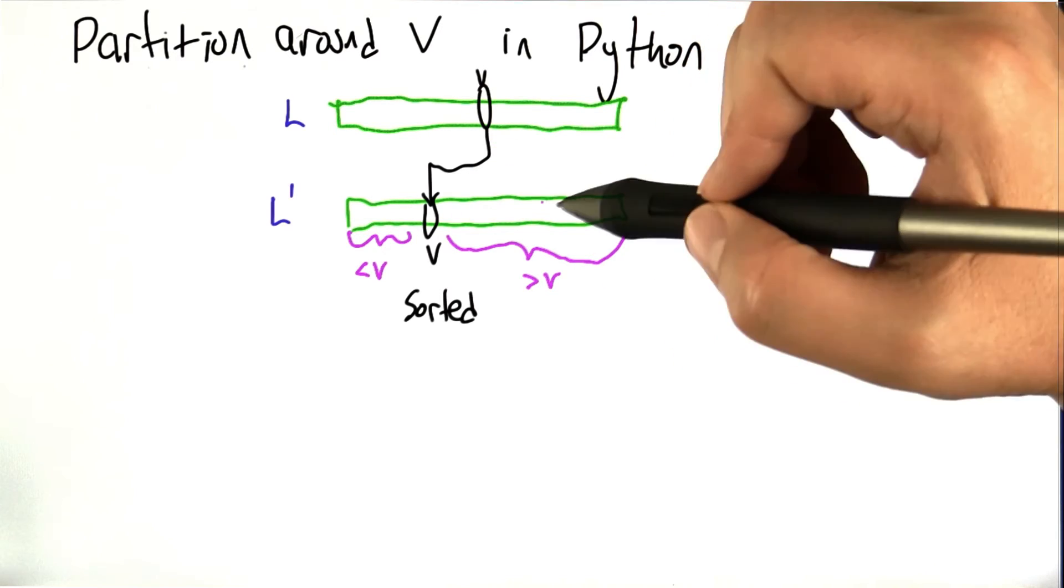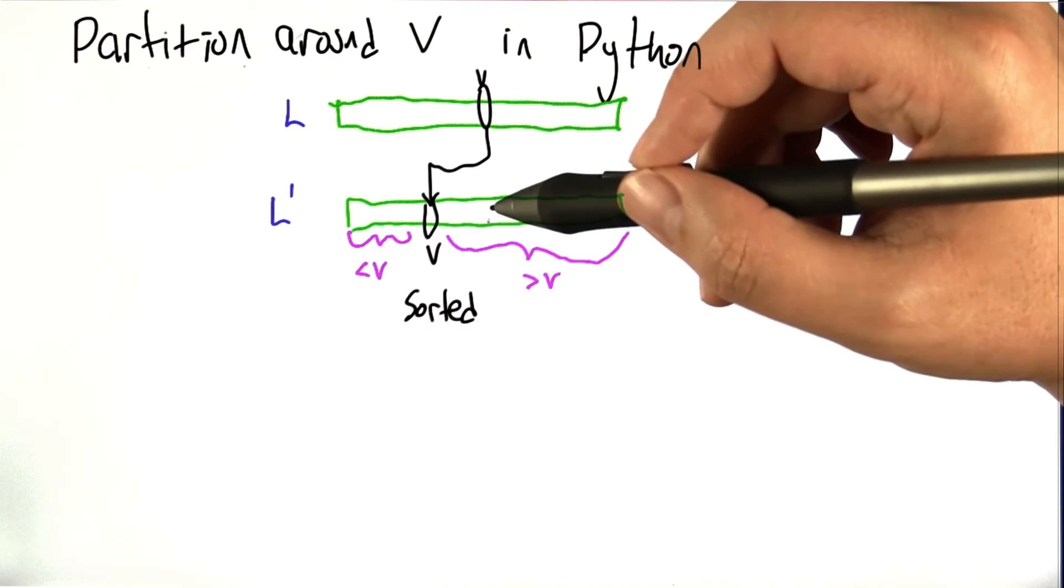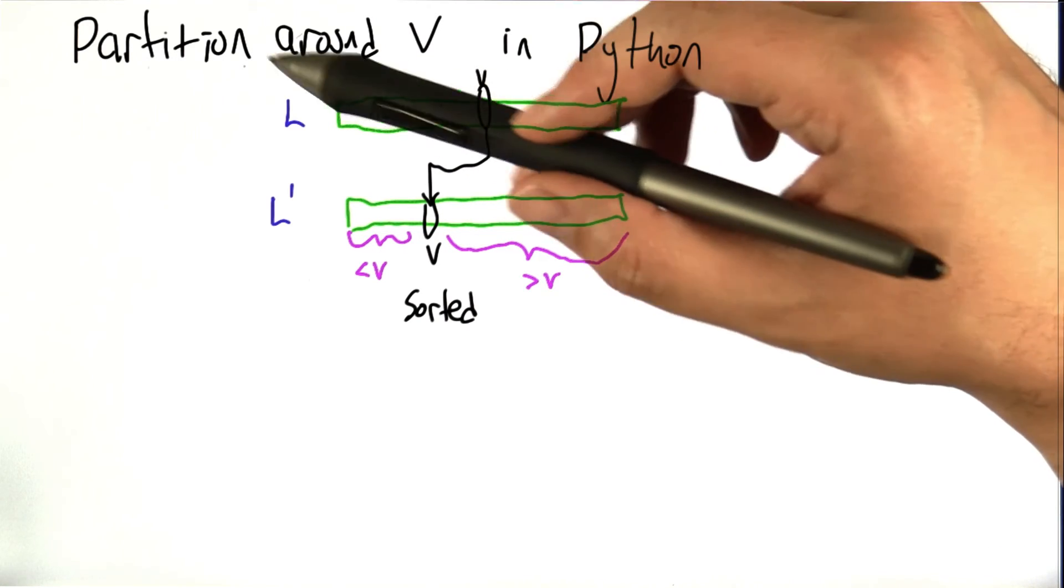And apart from that, we don't care what the order inside is. So it's kind of a partially sorted list, and we call this partitioning around v.